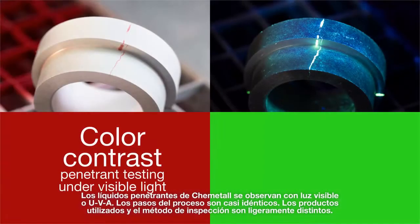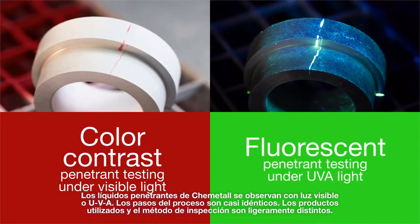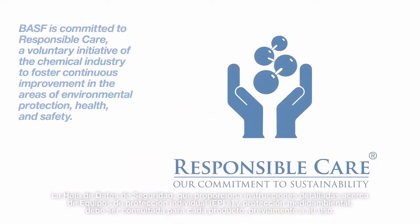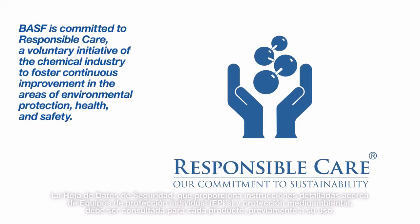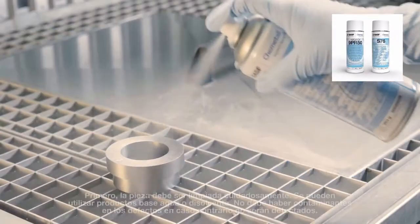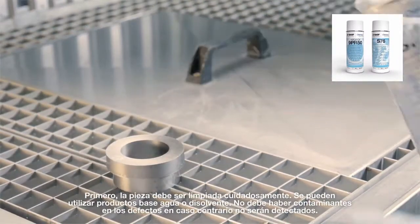Chemital's penetrants work with visible light or UVA light. The testing steps are almost identical; the products used and inspection methods are slightly different. The safety data sheet, which provides detailed instructions for proper personal protective equipment and environmental protection, must be consulted for each product prior to use.